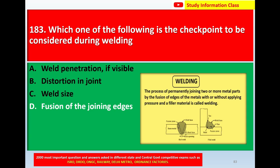Welding is the process of permanently joining two or more metal parts by the fusion of edges of the metals, with or without applying pressure and a filler metal. For question 183, the checkpoint to be considered during welding — correct answer is option D: fusion of the joining edges.